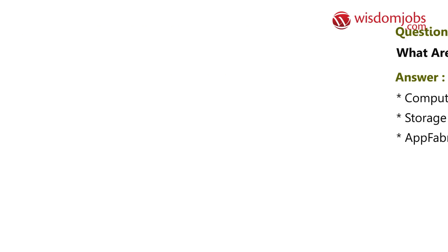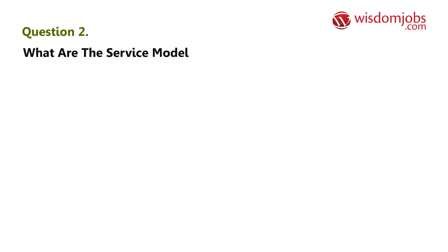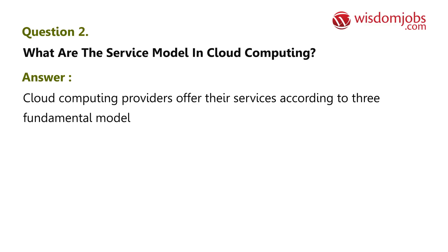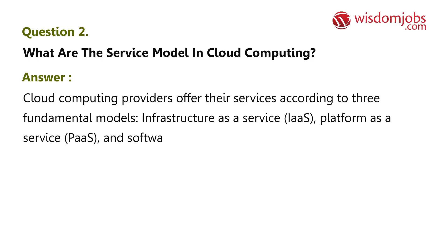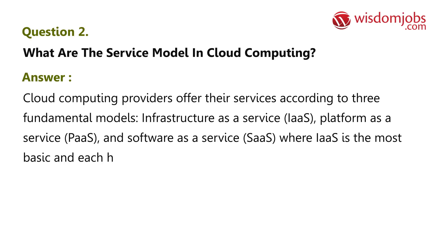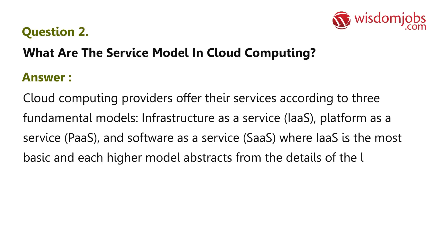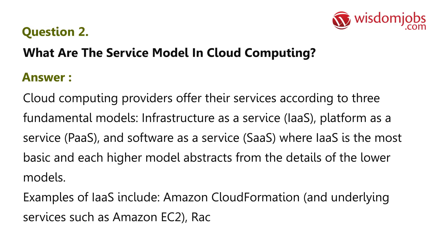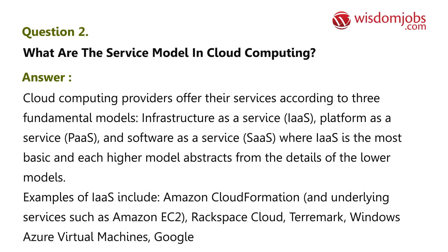Question 2: What are the service models in cloud computing? Answer: Cloud computing providers offer their services according to three fundamental models — Infrastructure as a Service (IaaS), Platform as a Service (PaaS), and Software as a Service (SaaS) — where IaaS is the most basic and each higher model abstracts from the details of the lower models. Examples of IaaS include Amazon CloudFormation and underlying services such as Amazon EC2, Rackspace Cloud, Terramark, Windows Azure Virtual Machines, and Google Compute Engine.